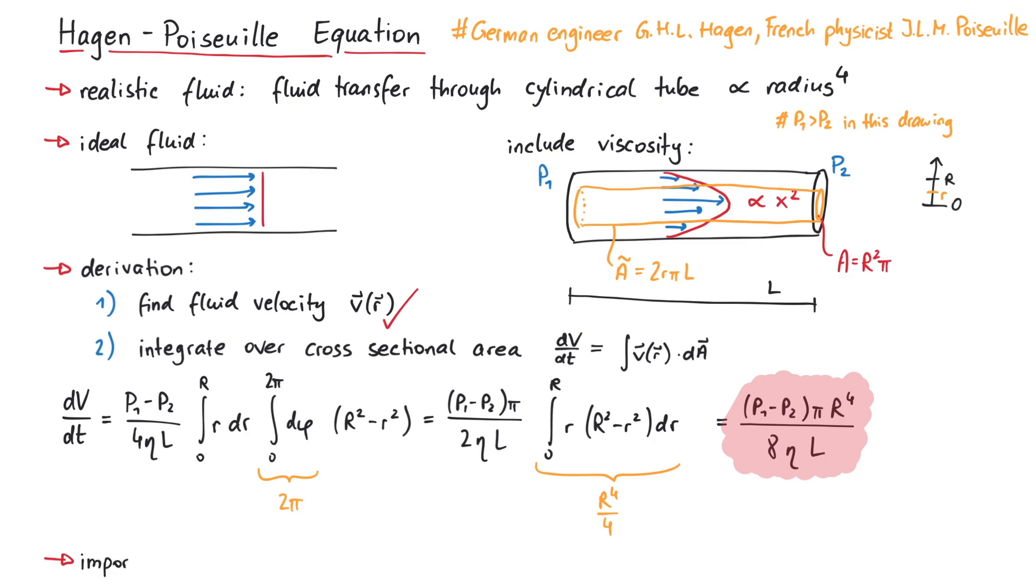This has important consequences for instance for blood circulation in the human body. By doubling or halving the radius of an artery, the human body can control how much blood flows through it by a factor of 16.